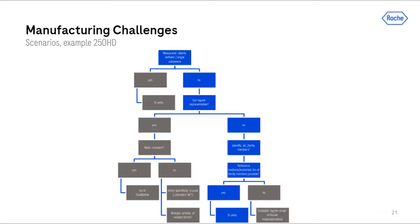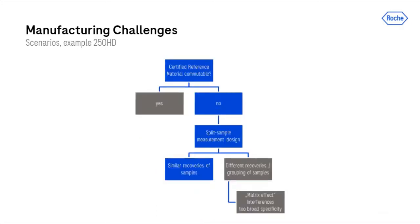In the case of 25-hydroxyvitamin D, there is also no single measurand, as there are two relevant forms: 25-hydroxyvitamin D2 and 25-hydroxyvitamin D3. Neither can be used as a single surrogate, as there is no constant ratio or dependency between these two analytes. The only option was to identify all relevant family members and develop reference methods for each. As hydroxyvitamin D is a small steroid, the method of choice was LC-MS, which allows quantitation based on SI units. However, regarding commutability, hydroxyvitamin D and many other steroids bear challenges — purified analyte in zero matrices does not recover quantitatively — so the split sample measurement design has to be applied.